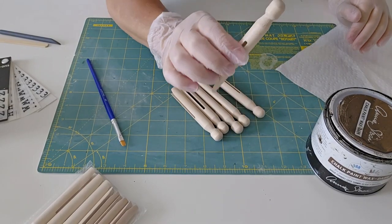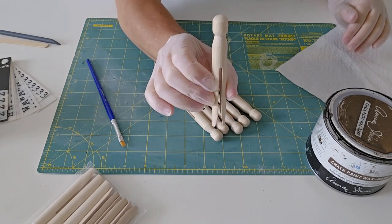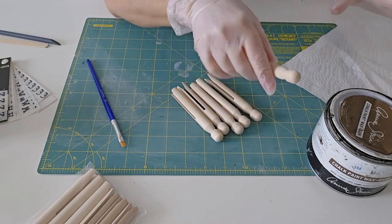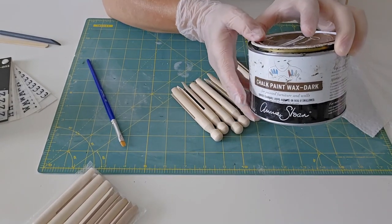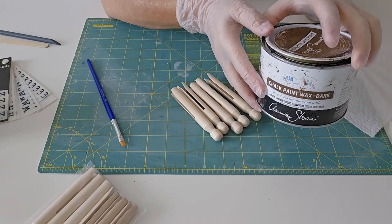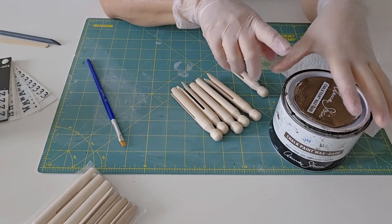The first way to add some vintage style to these raw wood clothespins is to either stain them or I like to use dark furniture paste wax. It's just faster, it's not quite as smelly, it dries much quicker.